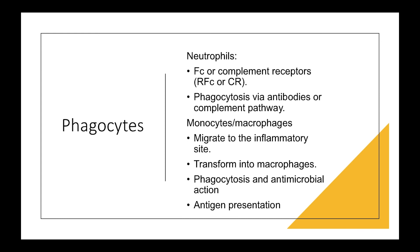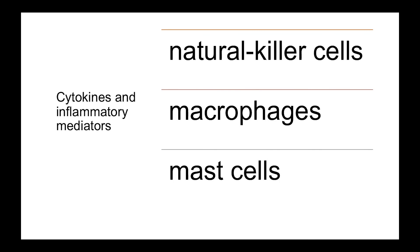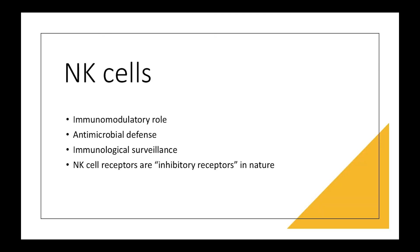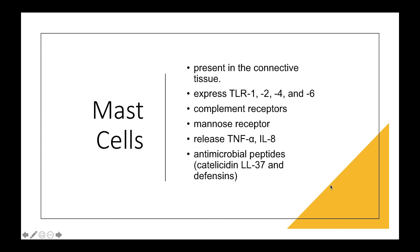Now let's talk about cytokines and inflammatory mediators. There are three types of cytokine and inflammatory mediators: natural killer cells, macrophages, and mast cells. Cytokines are substances secreted by various immune cells that may influence the function of other cells. NK cells play an immunomodulatory role and can initiate the innate immune system, and they can also influence the activity of other immune components by cytokine expression. Mast cells are mainly present in the connective tissue and they have toll-like receptors present on their surface and can get activated in the presence of pathogens. After activation, mast cells release inflammatory mediators such as TNF-alpha and IL-1-beta, and they can also release antimicrobial peptides.